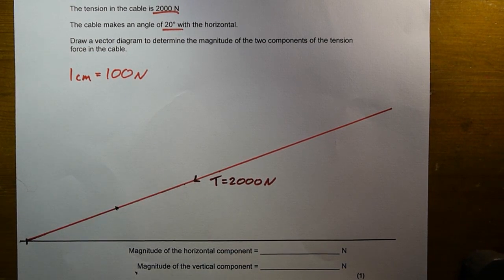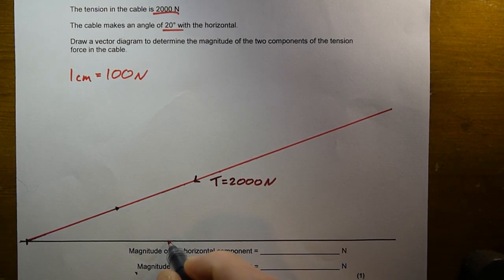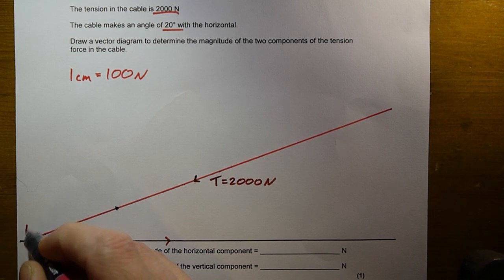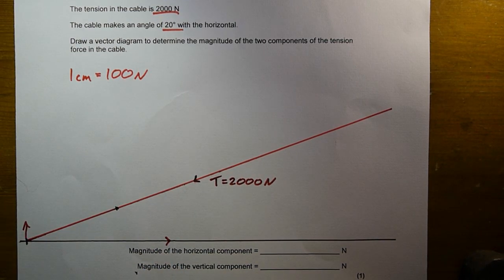So I need to now resolve that into a horizontal component and a vertical component. Now of course those components have their origin here, but it's easier for me to draw my horizontal component this way, and then find the vertical component by completing the third side on that triangle. So that's what I'm going to do.